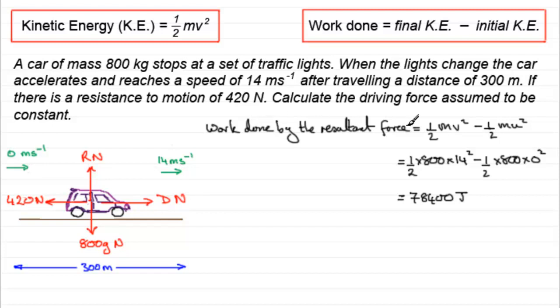Now that we've got the work done by the resultant force, we know that work done is the resultant force times the distance that force moves its point of application. In other words, the resultant force is d minus the resistance of 420 newtons, and that acts over a distance of 300 meters. So if we multiply that by 300, it is equivalent to the work done by the resultant force of 78,400 joules.